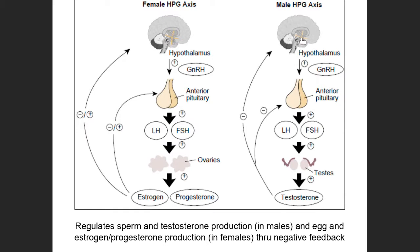At the top of the diagram there's a representation of the brain, and right in the center is an endocrine organ known as the hypothalamus. The hypothalamus produces a hormone called gonadotropin releasing hormone, abbreviated as GnRH. That hormone enters the bloodstream and travels a short distance to a structure just inferior and anterior to the hypothalamus — the anterior pituitary.